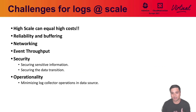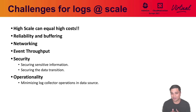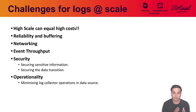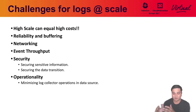When we look at challenges for logging at scale, we have to look at this from a broad overview. High scale can equal very high costs. You can have things like reliability and buffering — how do you make sure that logs get sent where they're supposed to? You don't want to open a request every single time you have a new message. Think about that when you're sending 10,000 to 100,000 messages per second. Networking is always an issue with ephemeral workloads in Kubernetes, air-gapped environments, and event throughput requirements.